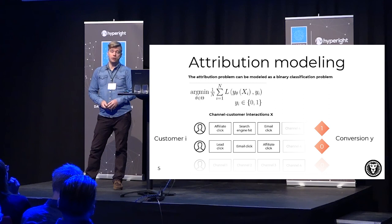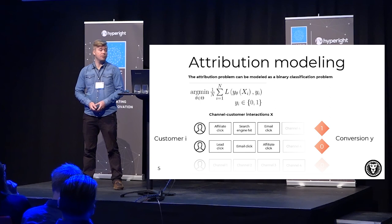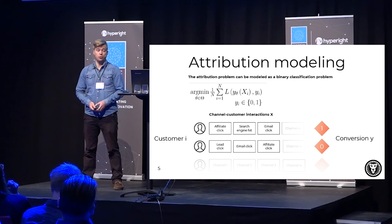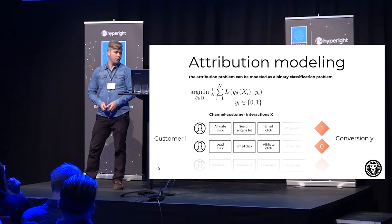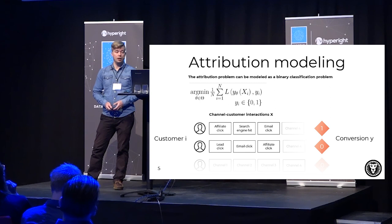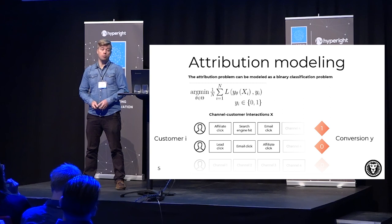One way to solve this is to think of it as a binary classification problem — quite a classical approach. You have a loss function L, you form a predictor y-theta of x, where x is simply the interactions. You have your labels, and in this case we're looking at conversion — whether a customer actually starts to use the services or not. We can then parameterize this and look for minimization of this loss. We have customers on the left with various interactions such as clicking on an affiliate link, a search engine, or an email. We are interested in the parameterization because we would like to use it to put weights on how important some of these features are.